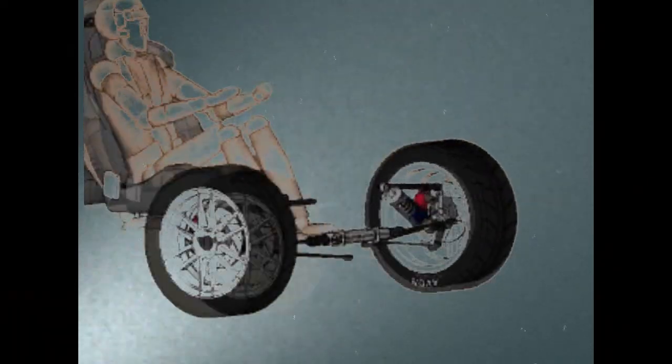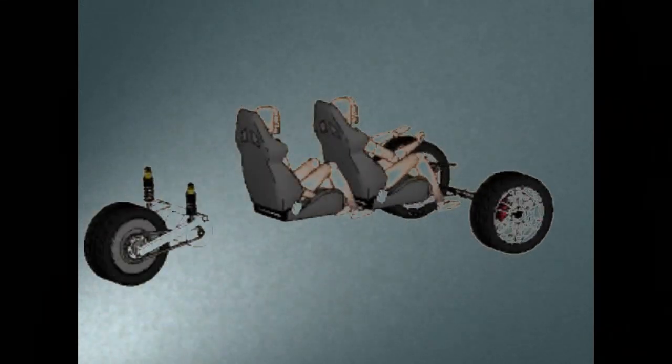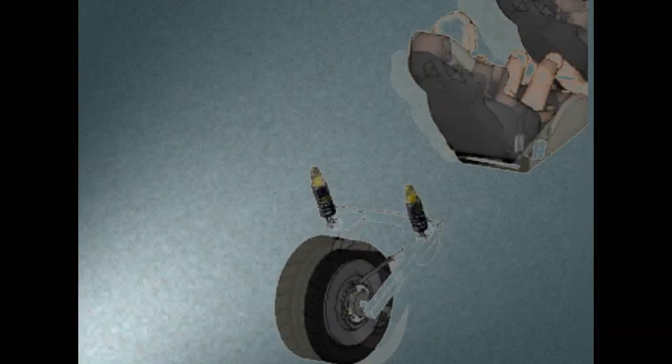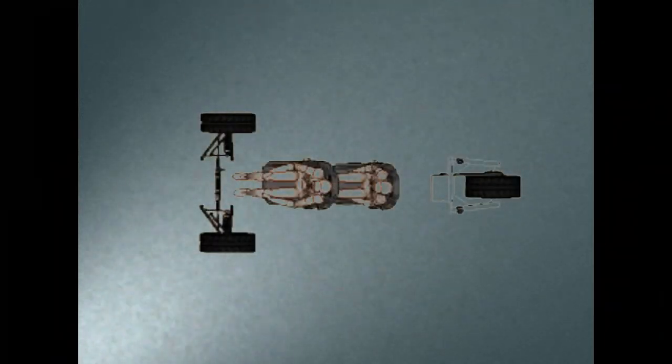The concept was further stripped down to three wheels instead of four. The rear wheel was taken from a Campagna T-Rex. The two front wheels were taken from a Caterham 7 kit car.